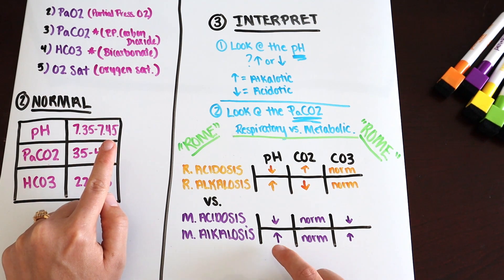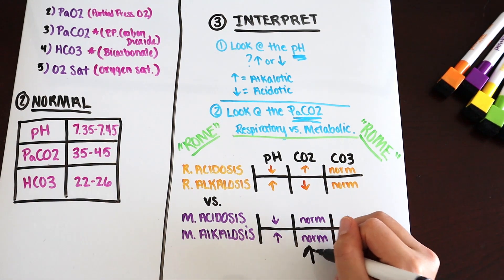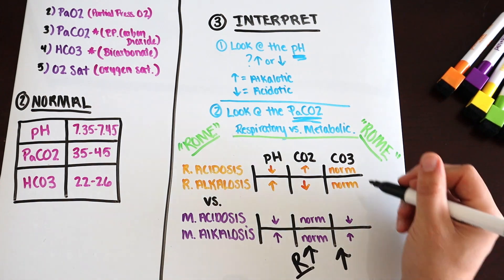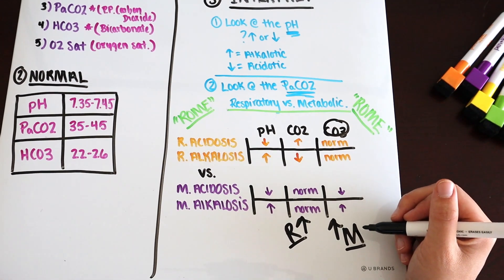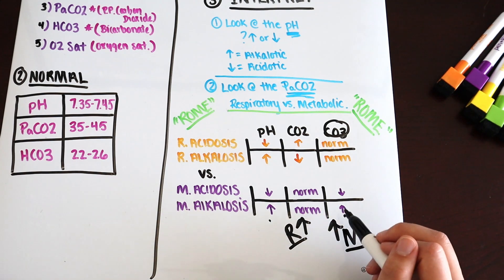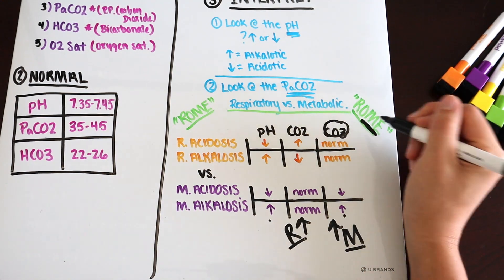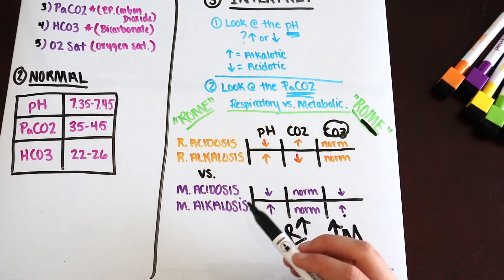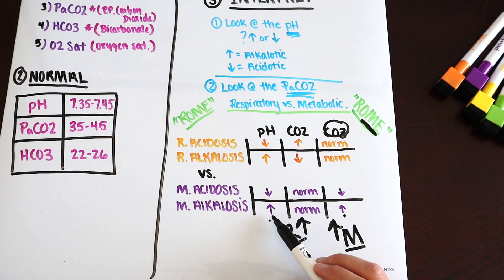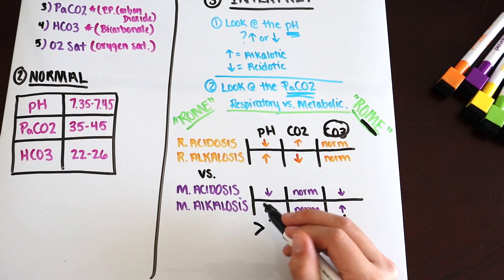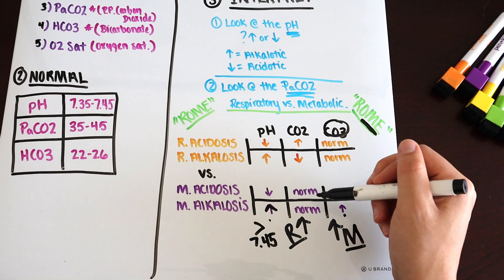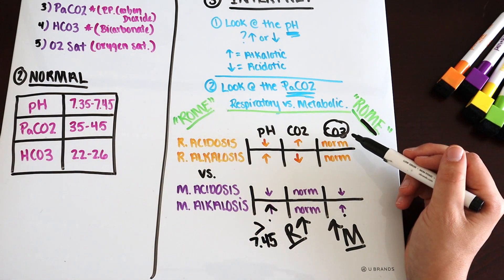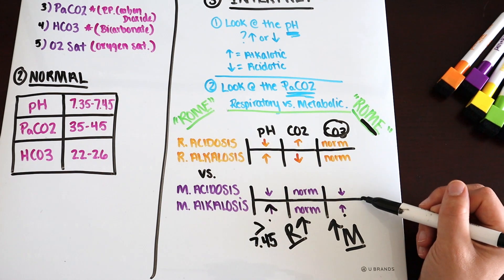For metabolic alkalosis, your pH is higher than 7.45 — that's alkalotic. Your CO2, the respiratory component, is normal, so nothing is going on in your respiratory system. But when you get to your HCO3, your bicarb and metabolism, it's increased. When those arrows are equally both going up, you know it is metabolic alkalosis.